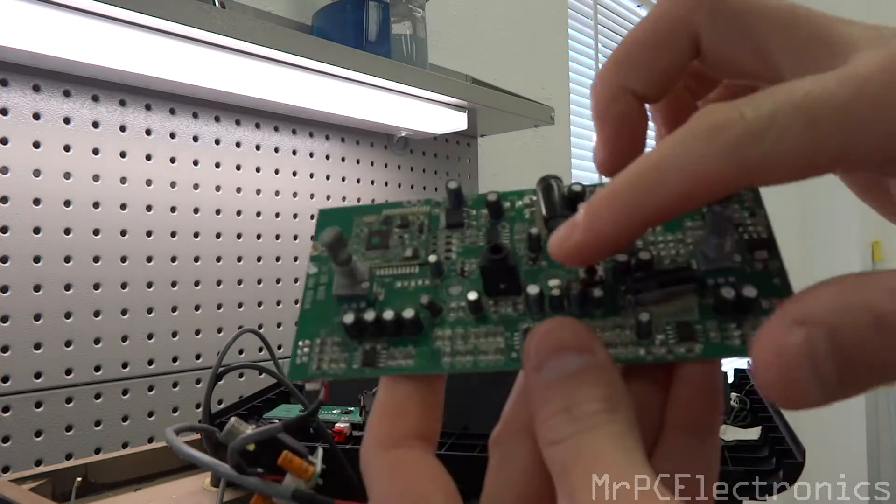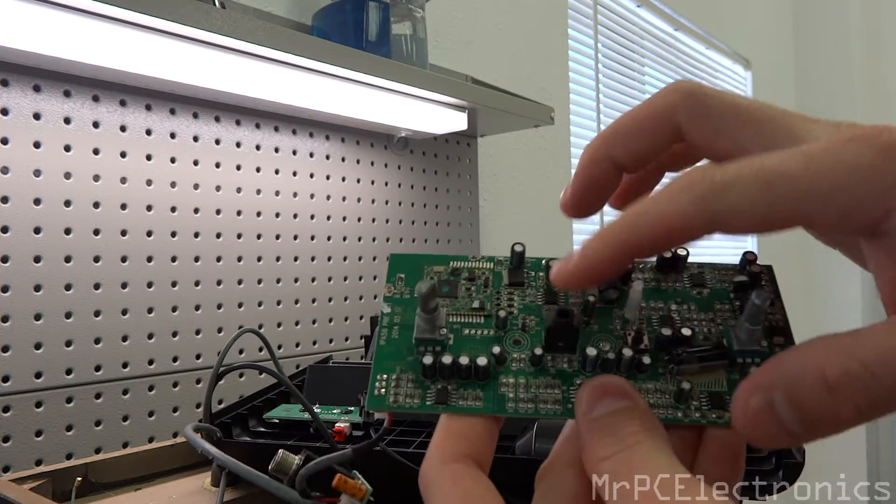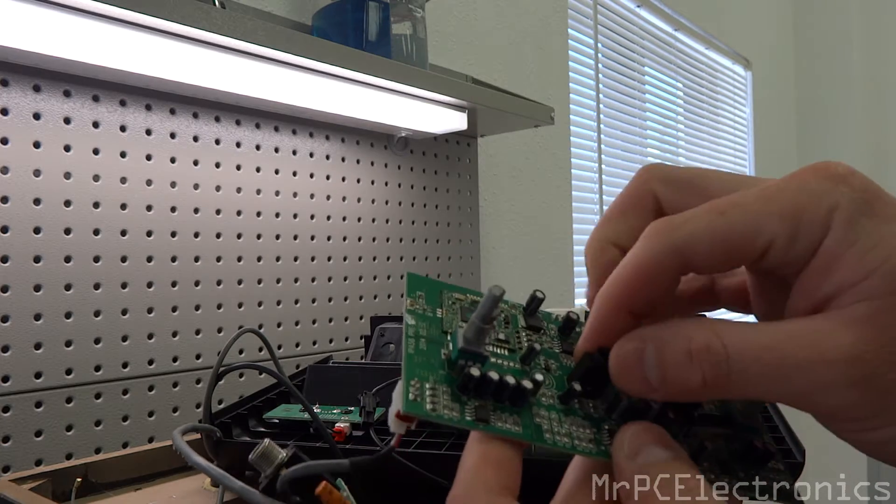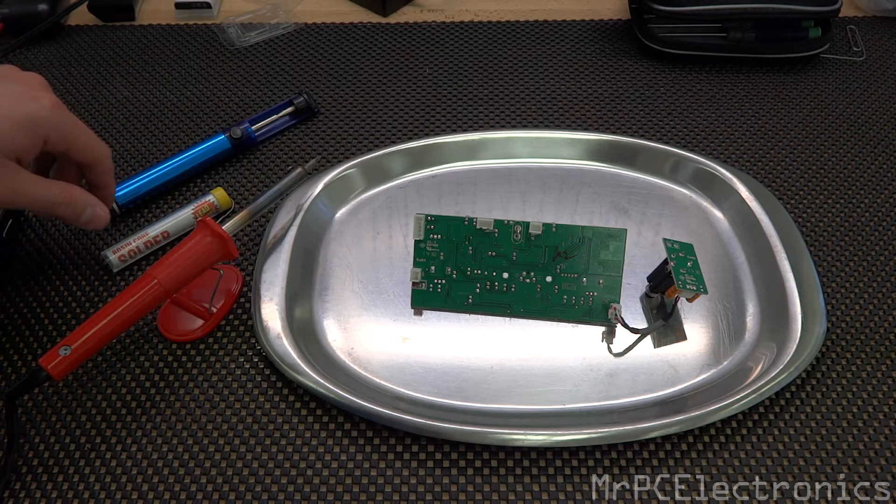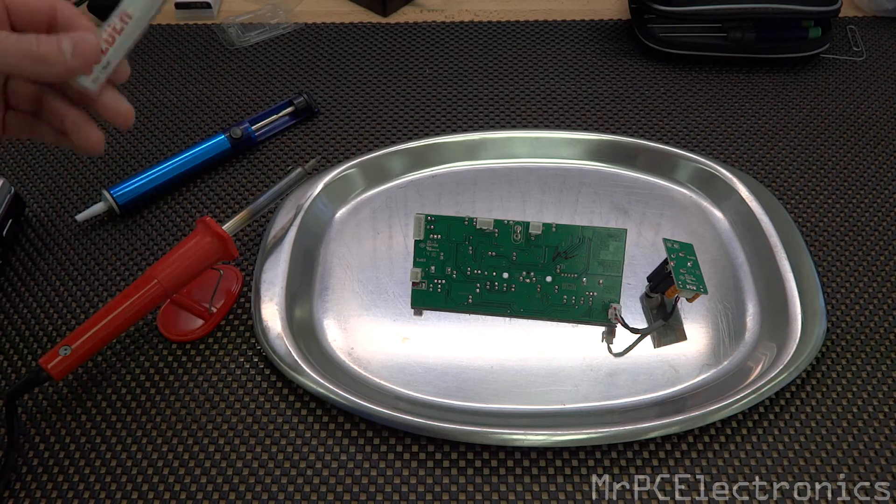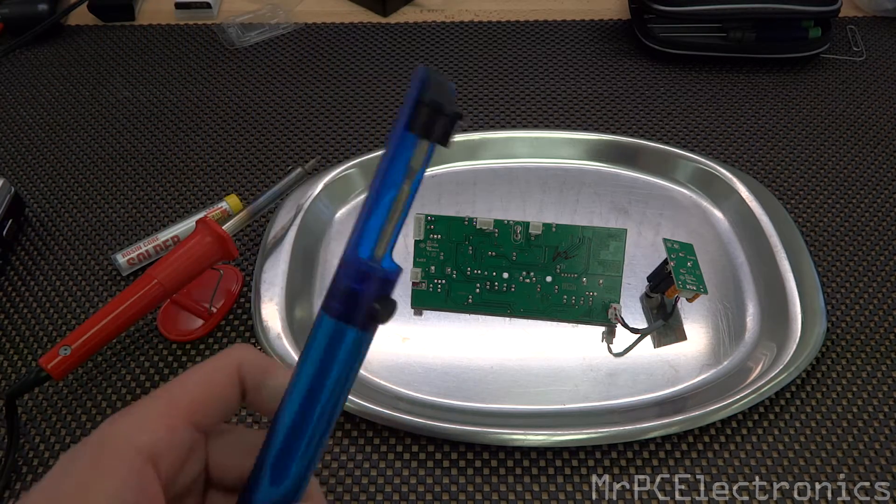Now if you look, this is the audio port right here. So we're going to remove this little jack, and I'm going to show you how to do that. So go ahead and let your solder gun heat up. Also I have some solder, and I have a solder removal tool.